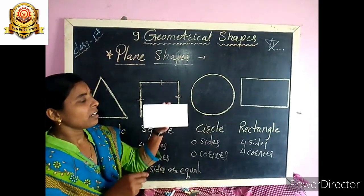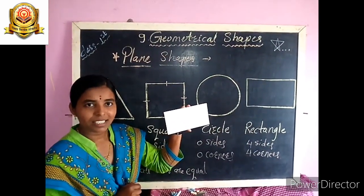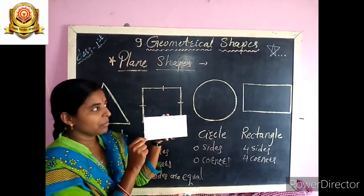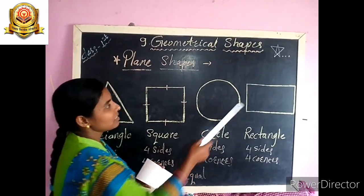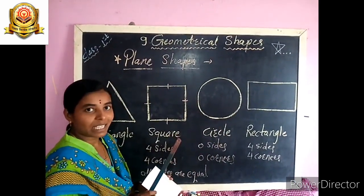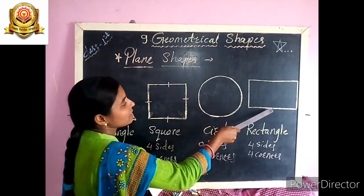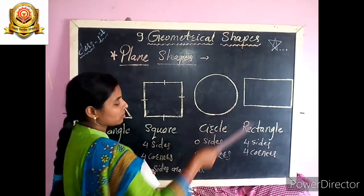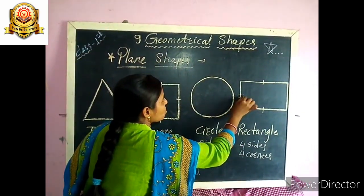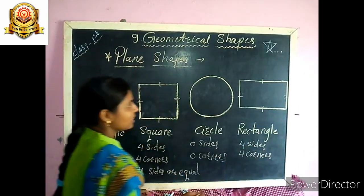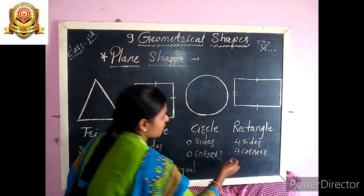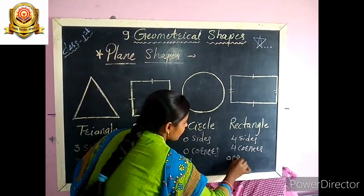Are all sides of a rectangle equal? No, not equal — all sides are not equal. These two sides are equal, and the opposite two sides are equal. Opposite sides of a rectangle are equal.